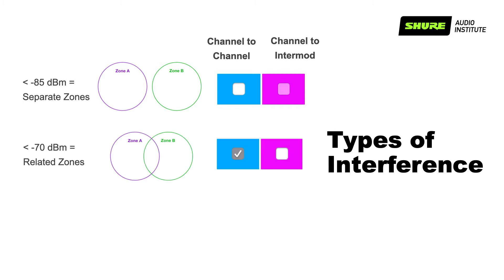If the signal peak is between negative 70 dBm and negative 85 dBm, consider these areas as related. So, respect channel-to-channel spacing, but ignore channel-to-intermodulation spacing.